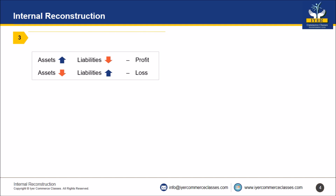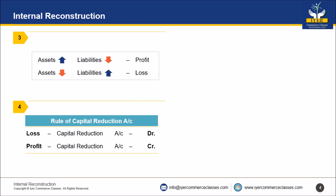If asset increases or liability decreases, that is a profit for the company. If asset decreases or liability increases, that is a loss for the company. The rule is: if there is a loss, Capital Reduction Account will be debited; if there is a profit, Capital Reduction Account will be credited. So Capital Reduction Account — loss on the debit side, profit on the credit side.